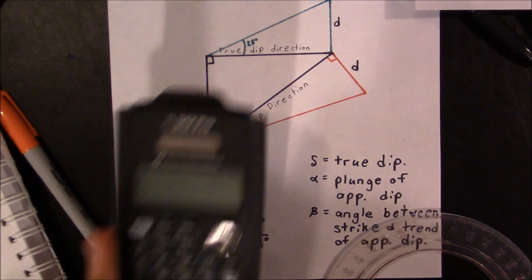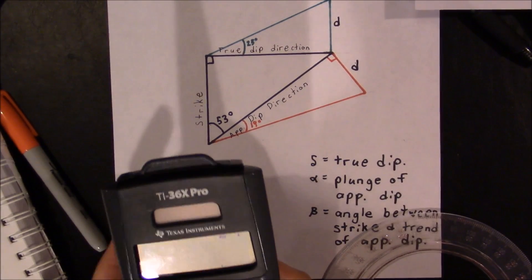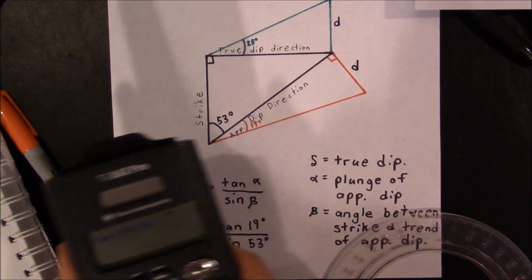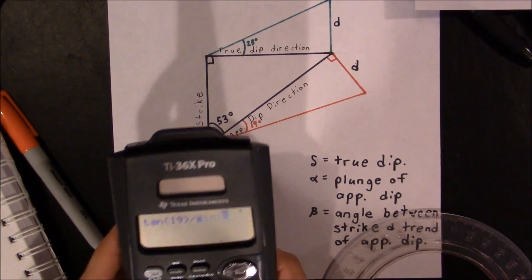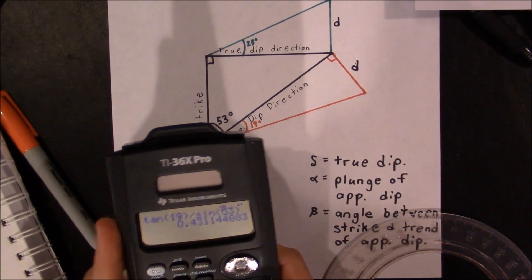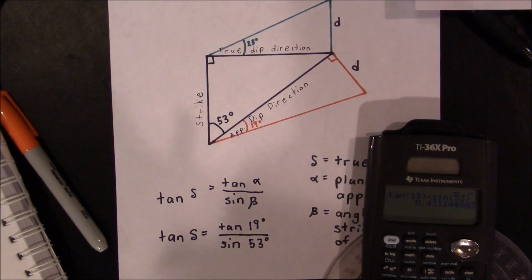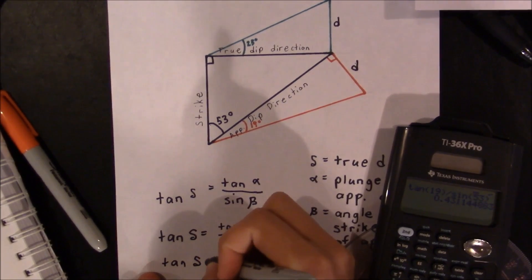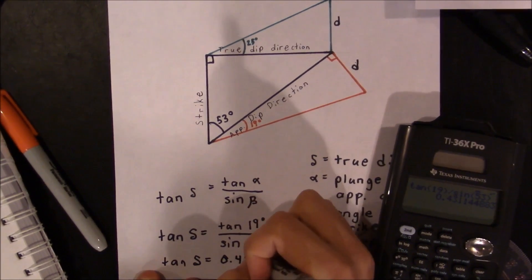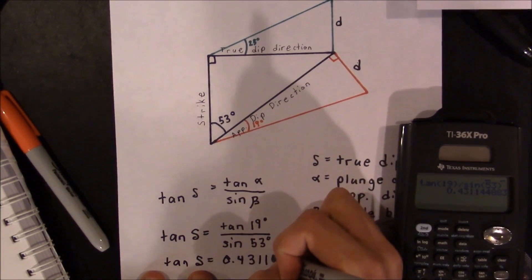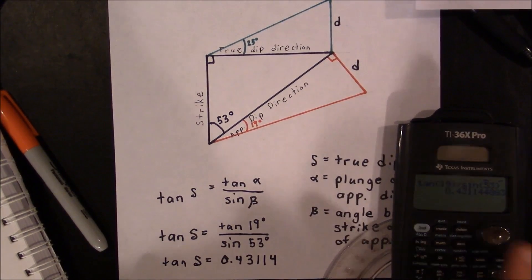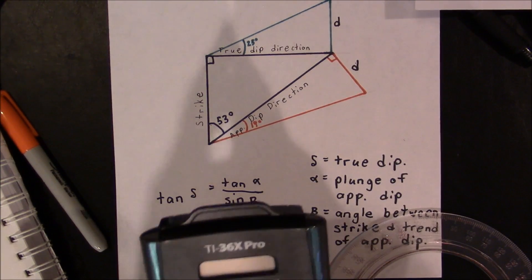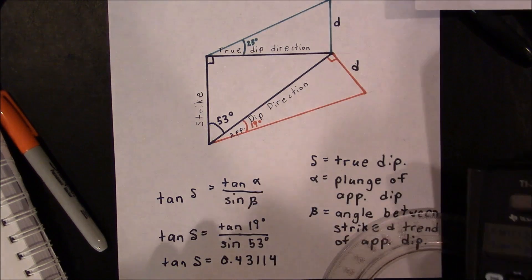and then we can use our calculator to actually figure out what this answer is. So if we plug this into our calculator, we are going to get the following answer. So we have the tangent of 19 degrees divided by the sine of 53 degrees, and that gives us 0.43114.